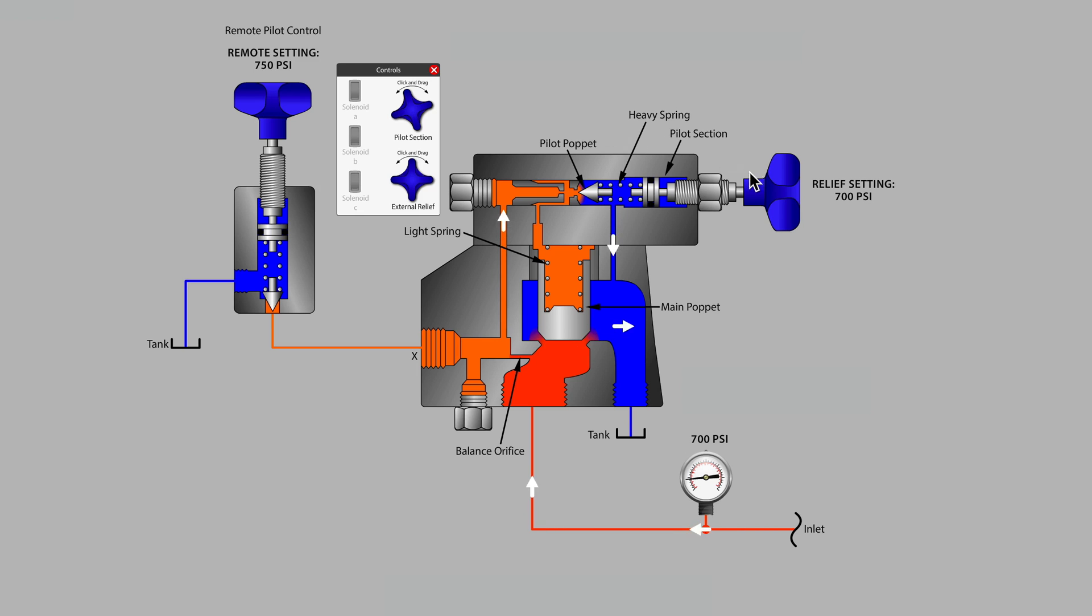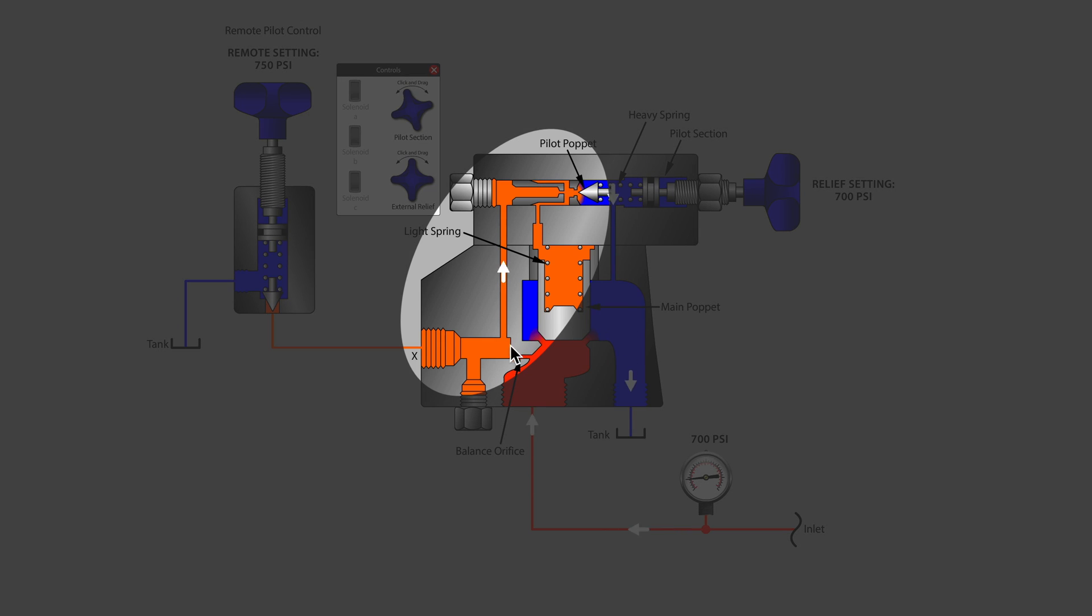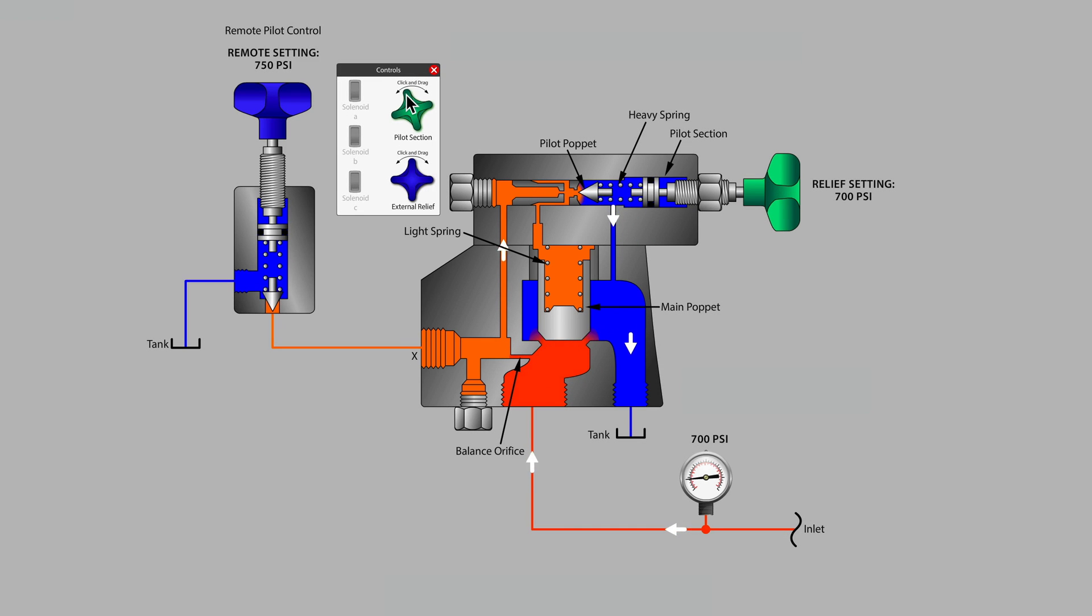As we turn the adjustment on the main pilot section, particularly keep track of these white pilot flow arrows. Let's see what happens. Here we go over 750. What you will notice is now that we're set to 770 psi on the main valve's pilot section, we no longer have pilot flow moving through that built-on, bolt-on pilot section.